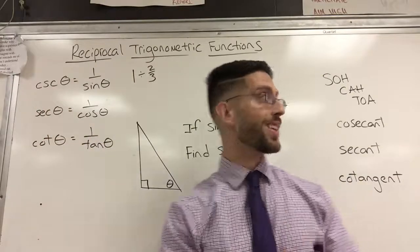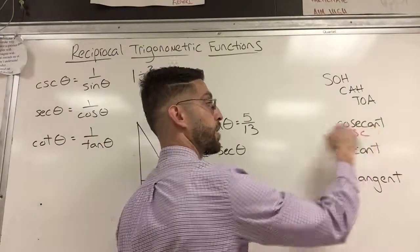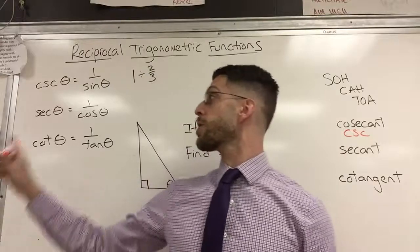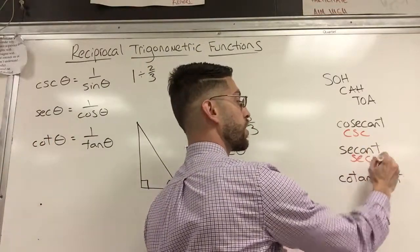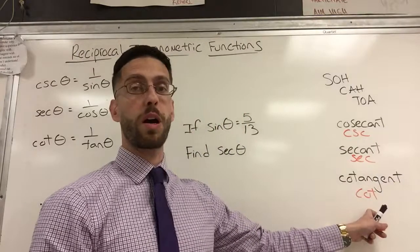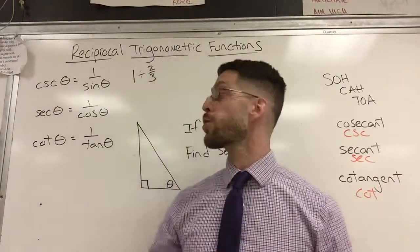This notation cosecant comes from cosecant. This notation secant comes from the actual word secant and cotangent is shortened by writing C-O-T. So that's just shorthand.